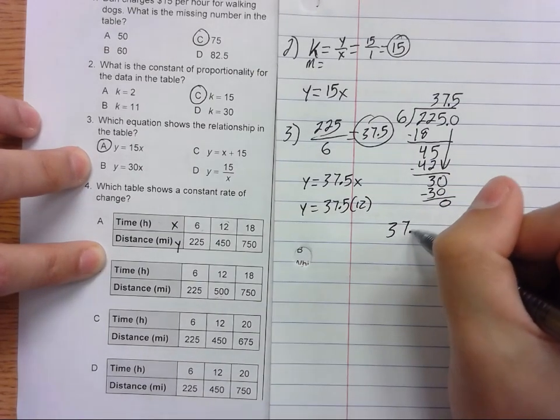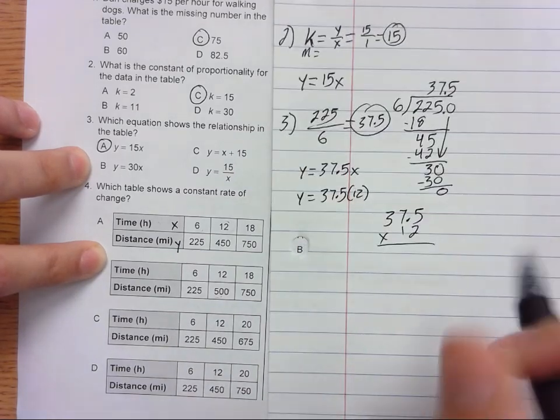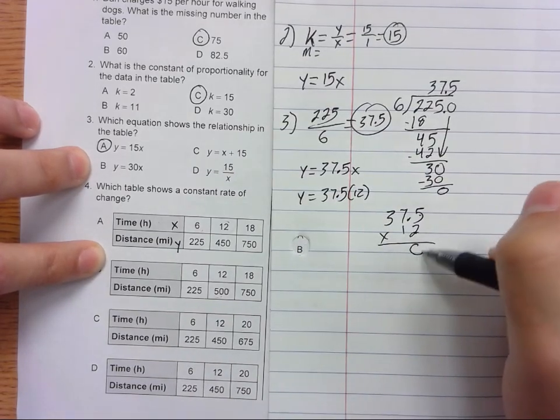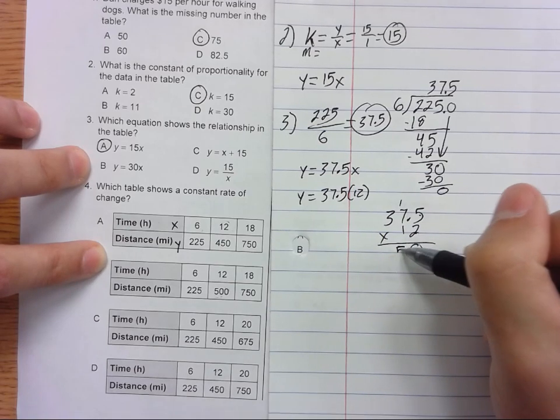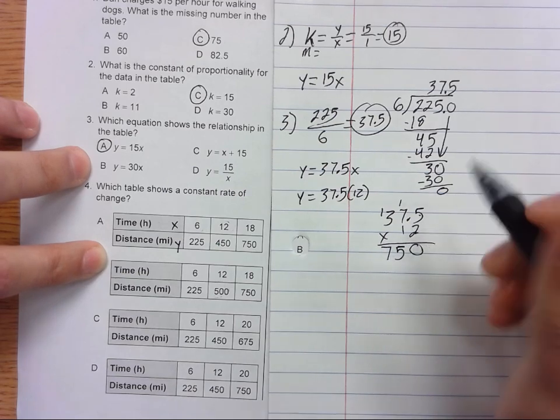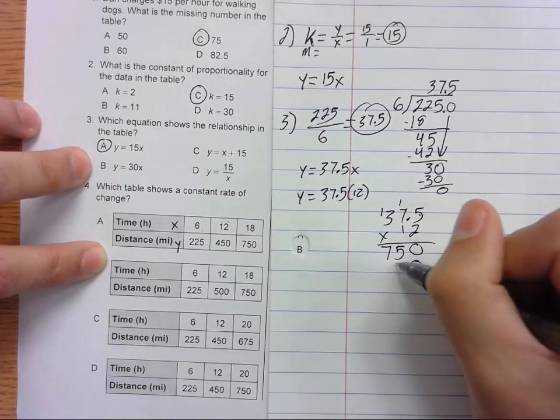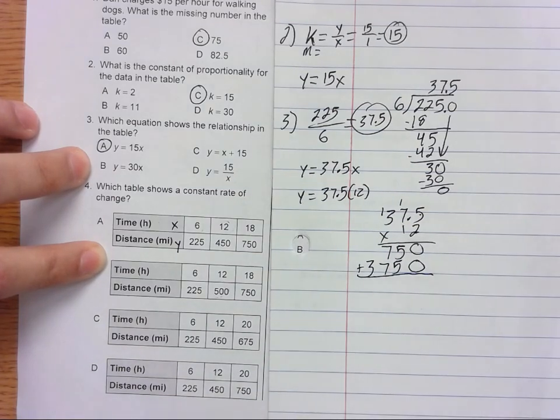So Y equals 37.5 times 12. Let's figure that out: 37.5 times 12. When we multiply that, 2 times 5 is 10, carry the 1. 2 times 7 is 14 plus 1 is 15, carry the 1. 2 times 3 is 6 plus 1 is 7. Zero, then we get 5, 7, and 3. So let's add these up.